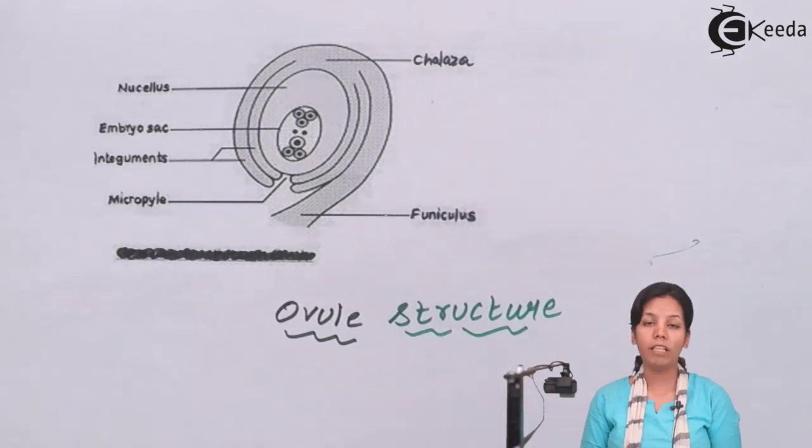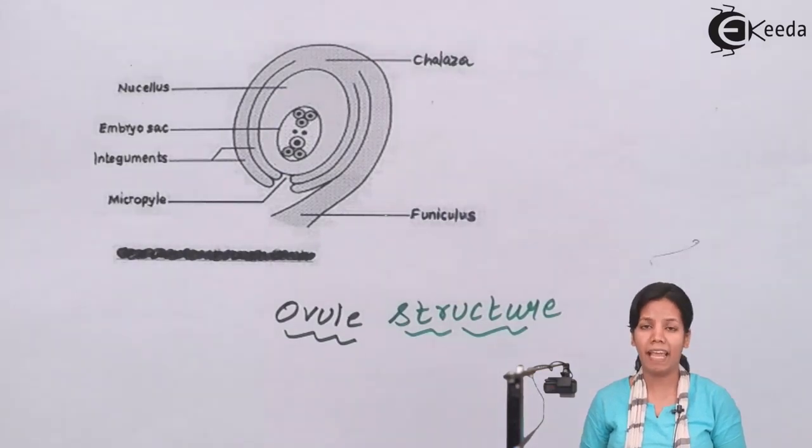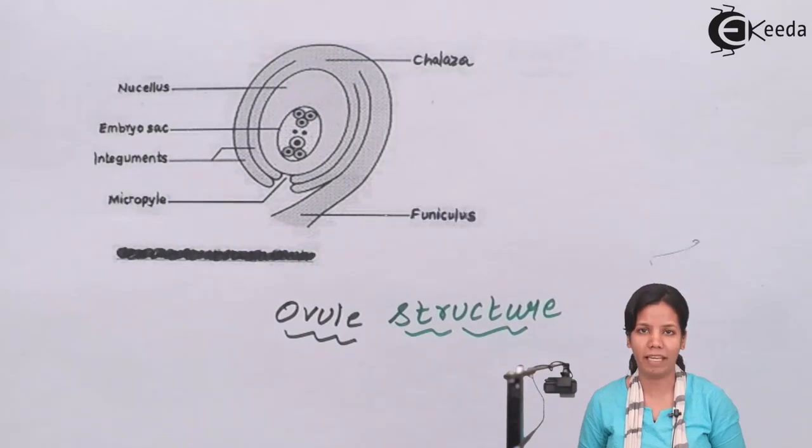We all know that during the process of reproduction, the male gametophyte and the female gametophyte are involved. The male gametophyte will have pollen grains where the female gametophyte will be having the egg cell, and without the female gametophyte reproduction in plants won't be possible. Today we'll be studying the different parts of female gametophyte.